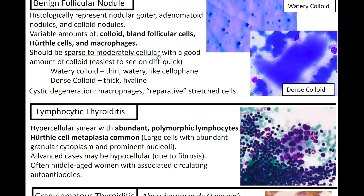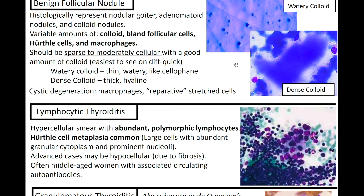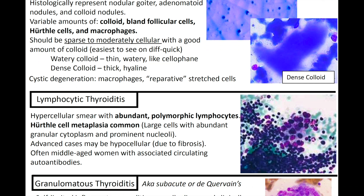There are at least two types of colloid you can see: watery colloid, which is thin and watery like cellophane, or dense colloid, which is thick and hyaline-like. Also in FND, you can see cystic degeneration, which includes macrophages with or without reparative stretch cells.